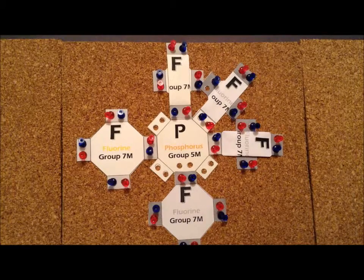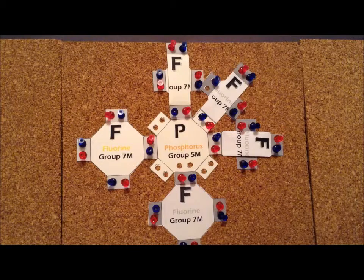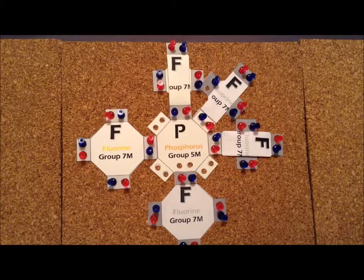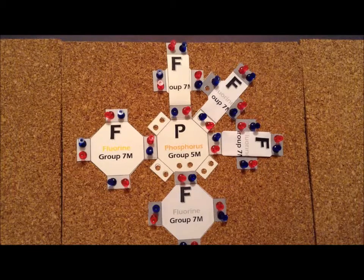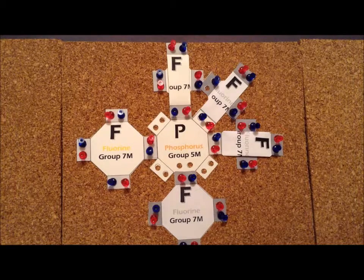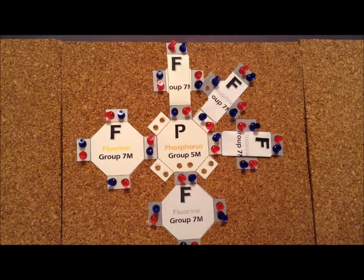Phosphorus pentafluoride has the chemical formula PF5. So, for the five fluorine atoms, we need seven times five equals 35 electrons. The phosphorus atom contributes five, so that gives us a total of 40 electrons that we have to allocate for this particular molecule.